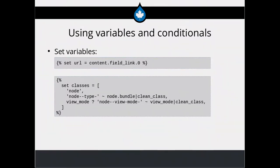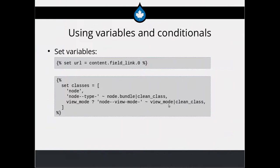Using variables and conditionals: you can set a variable that you might use in different ways later — a simple variable or classes as an array. Almost any template file is going to set classes first, particularly for nodes. An example from the Classy theme generates classes by setting a classes array — there's 'node', then 'node--type--' with the node bundle concatenated using the tilde operator (like a dot in PHP). The next one is a one-line conditional: if there's a view mode, add that as a clean class.